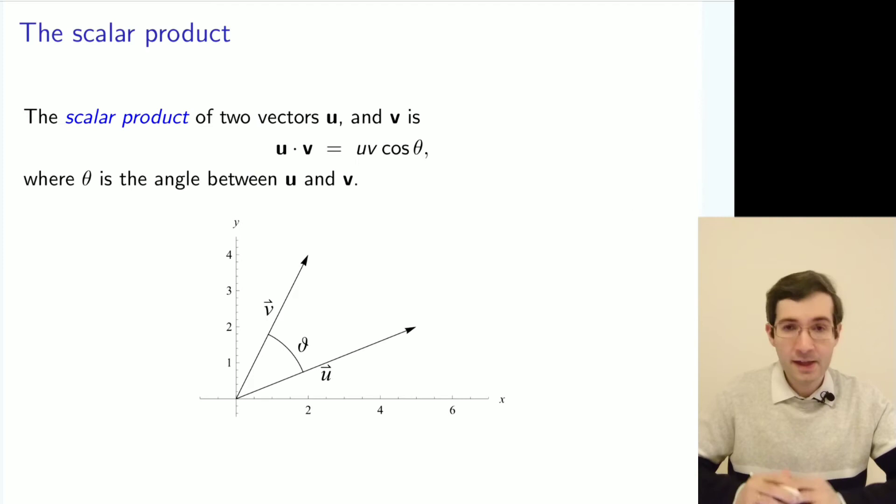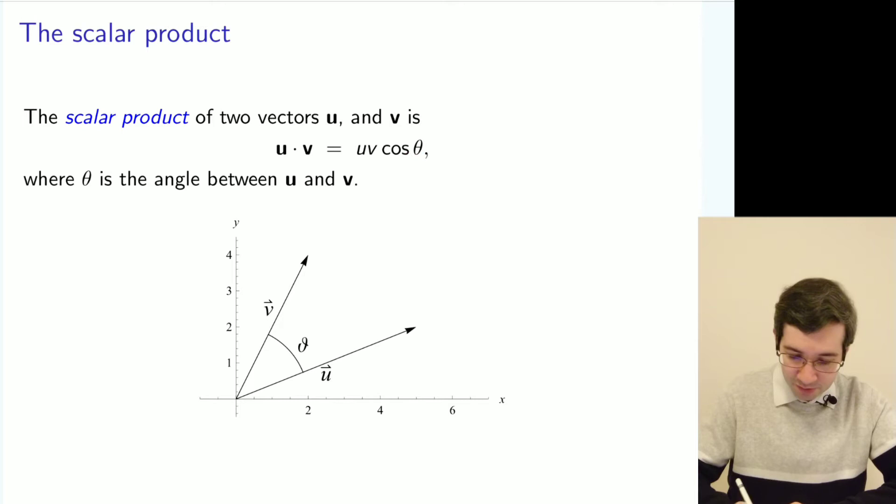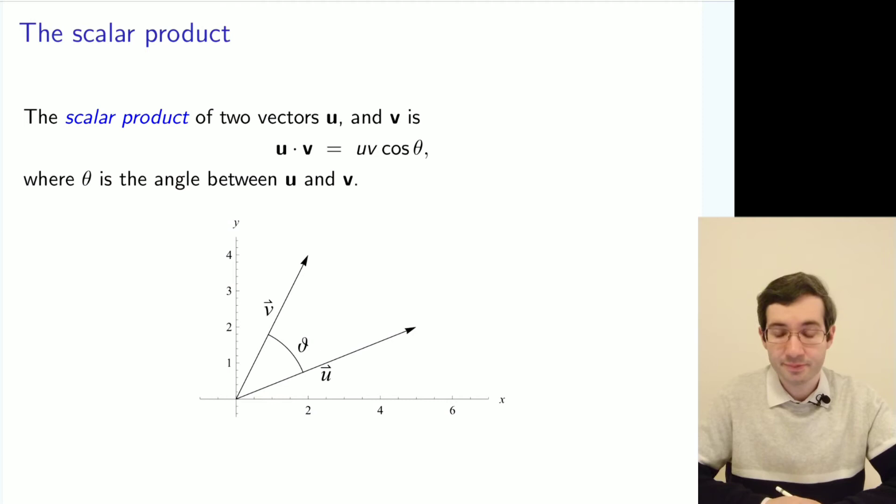You can define two types of products between vectors. The one shown here is called the scalar product. It's called scalar because the result will be a scalar. You take two vectors and get a number as result, and it will depend on the angle between the two vectors and also on their magnitudes.